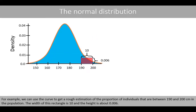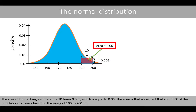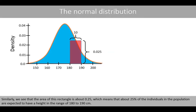For example, we can use the curve to get a rough estimate of the proportion of individuals between 190 and 200 centimeters in the population. The width of this rectangle is 10, and the height is about 0.006. The area is therefore 10 times 0.006, which equals 0.06, meaning about 6% of the population have a height in the range 190 to 200 centimeters. Similarly, the area of the rectangle for 180 to 190 is about 0.25, meaning about 25% of individuals are expected to have a height in that range.